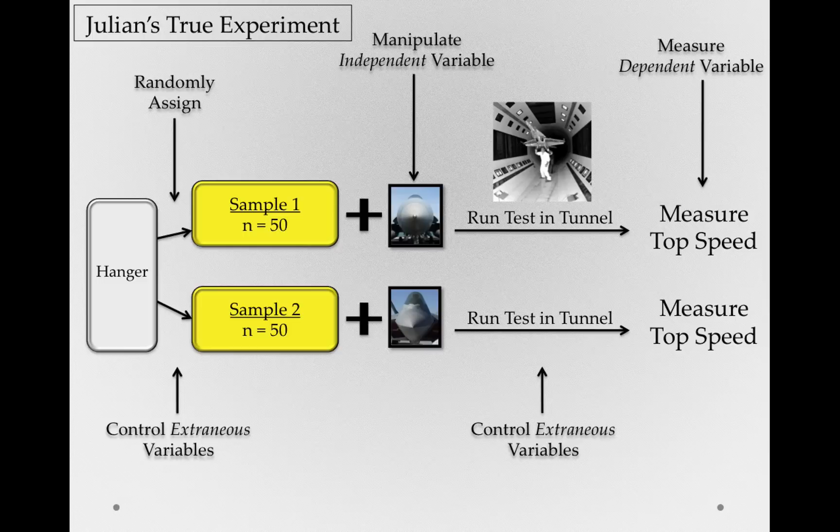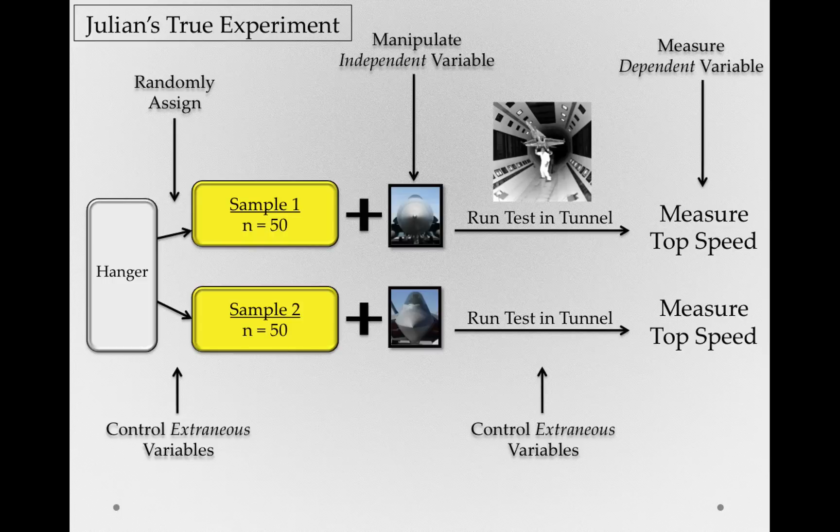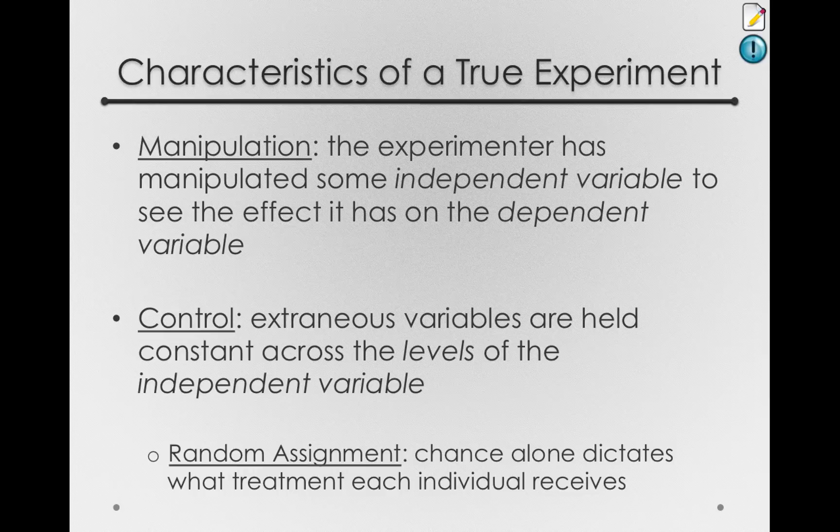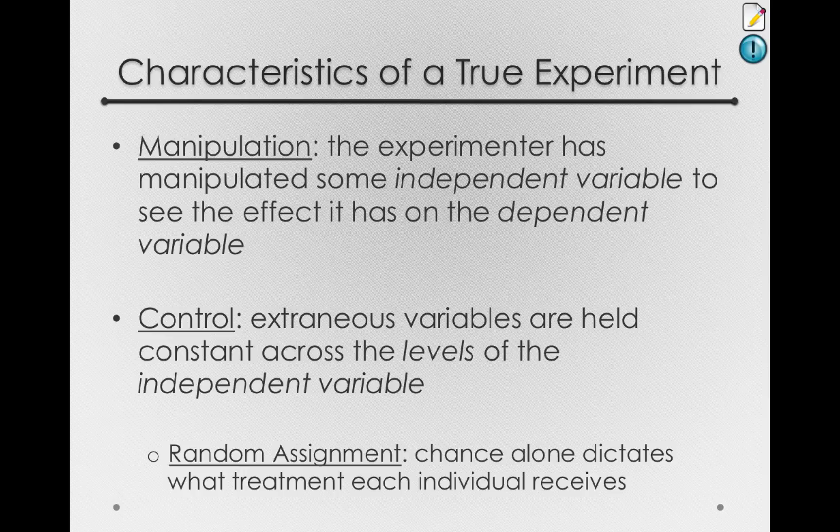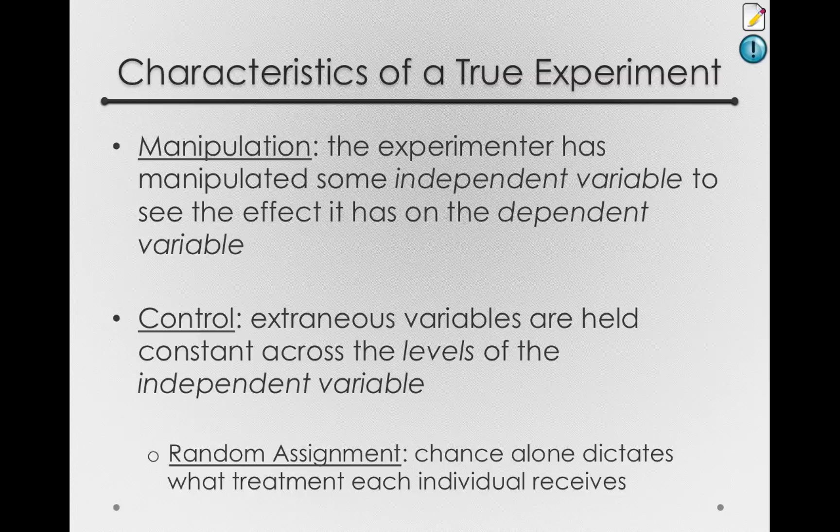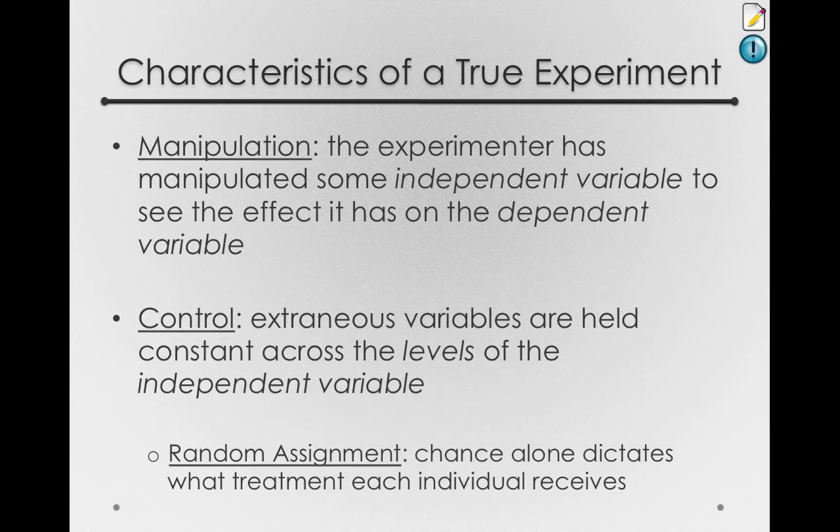So, by doing an experiment rather than a correlational study, we've actually been able to measure the world in a way that lets us say something definitive about the effect of the variable we want to measure, the independent variable. And this is all made possible through these characteristics of a true experiment. Manipulation, actually changing something for some individuals, and control, making sure that every other variable that might have a relationship to the dependent variable is the same or at least constant across the different levels or the conditions of the independent variable. And random assignment is going to be our principal way of doing this. And remember, this is that chance alone dictates which treatment each individual receives. And in so doing, we ensure that there are no systematic differences between the groups.